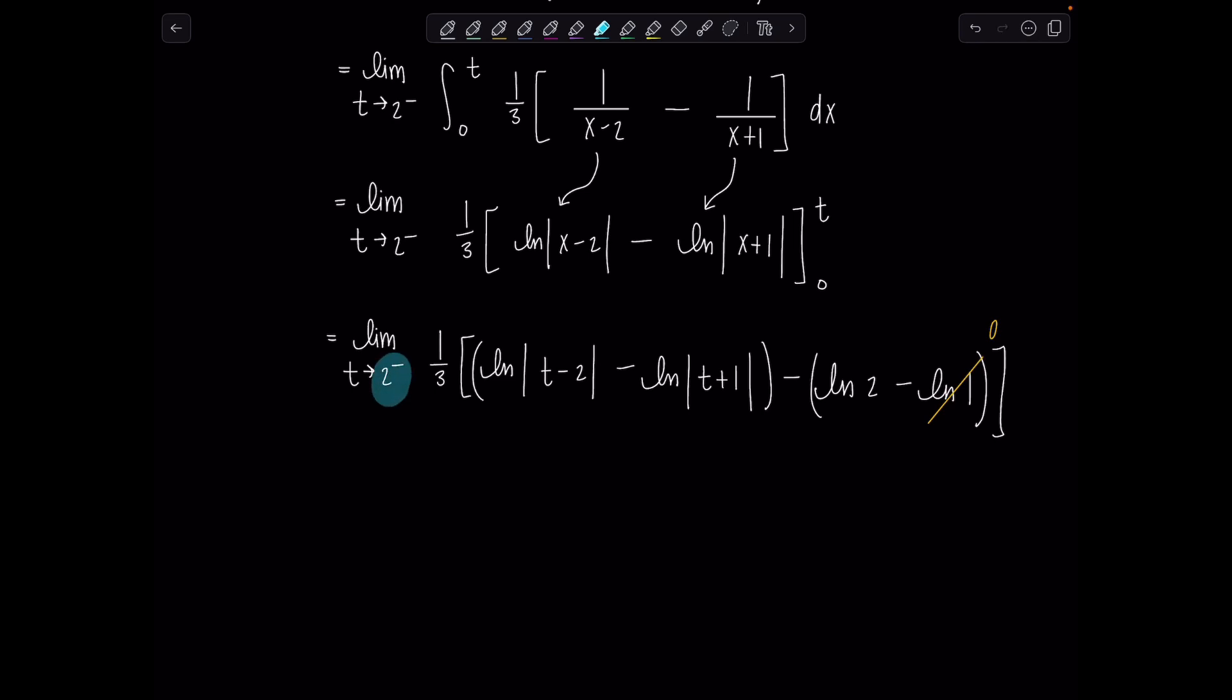t is approaching 2 from the left. So that means it's coming from values smaller than 2. Like 1.9 minus 2. This might make you nervous for a hot second. This is going to 0 through negative values. But then thankfully, we have these absolute value bars, which means we're going to 0 through positive values. That was a close one, guys, because we know natural log, its domain is restricted to only values that are positive.